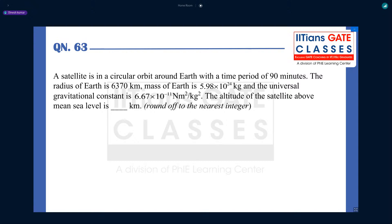Another question from Space Dynamics is question number 63. A satellite is in a circular orbit around Earth with a time period of 90 minutes. The radius of Earth is 6370 km, mass of the Earth is 5.98 times 10 to the power 24 kg, and the universal gravitational constant is 6.67 times 10 to the power minus 11 newton meter square per kg square. The altitude of the satellite above mean sea level is, so H is unknown. This is like first time they gave a calculative question from time period.